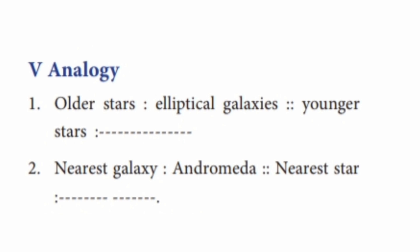Section 5: Analogy-based matching. Older stars are found in Elliptical Galaxies, while younger stars are found in Spiral Galaxies.